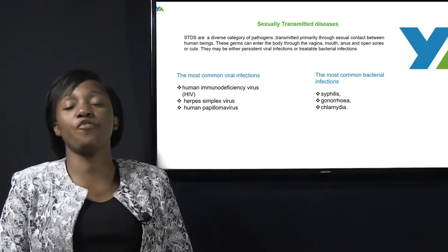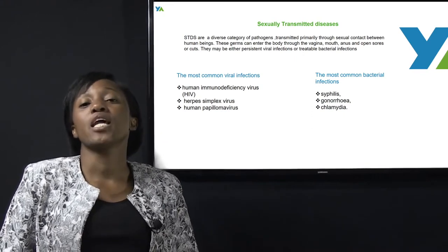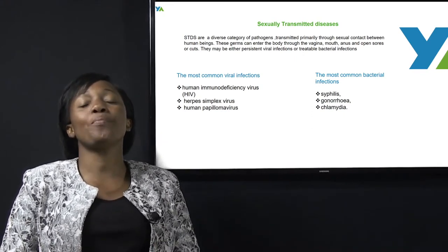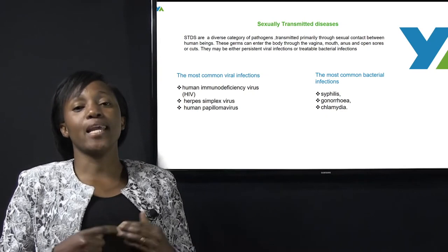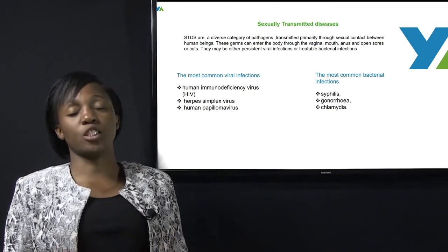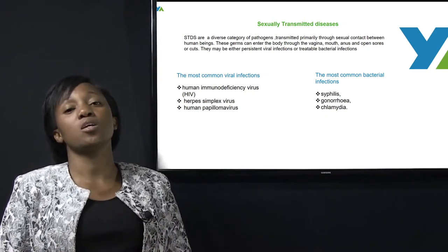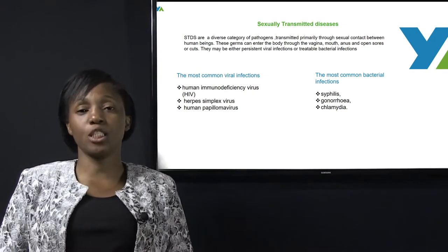Examples of viral infections are HIV, herpes simplex, and human papillomavirus. Examples of bacterial STDs are syphilis, gonorrhea, and chlamydia.